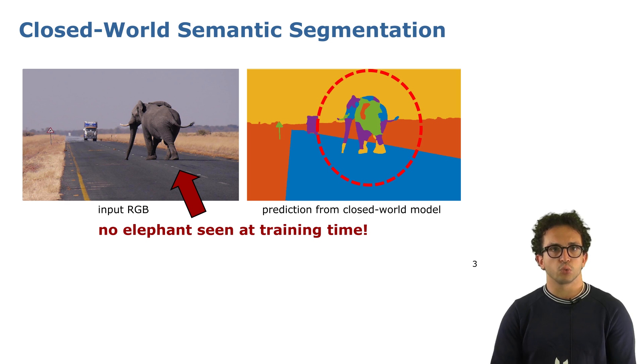The problem is that closed-world approaches fail in recognizing anything that didn't appear at training time, so something they've never seen before.